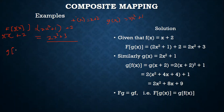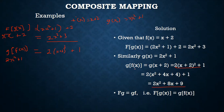Now for g(f(x)): using g(x) = 2x² + 1, we substitute f(x) = x + 2 in place of x. So g(f(x)) = 2(x + 2)² + 1. Expanding (x + 2)² gives x² + 4x + 4. Multiplying by 2: 2x² + 8x + 8, then plus 1 gives 2x² + 8x + 9.